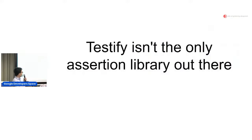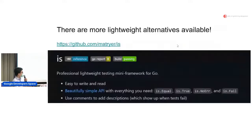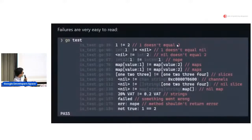So testify isn't the only assertion library out there. There's actually this more lightweight alternative by Matt Ryer. This package is called is. This second bullet point tells you everything you need to know about it. You've got just four functions in the entire thing: is.Equal, is.True, is.NoError, and is.Fail. It's self-explanatory, and that's pretty much what you need most of the time. The failures are very easy to read.